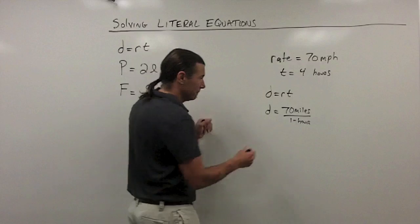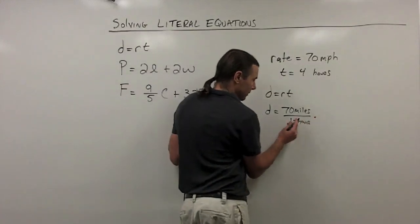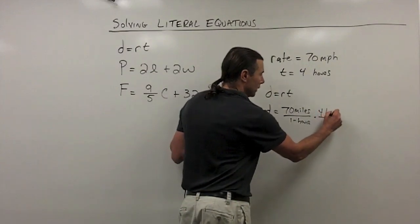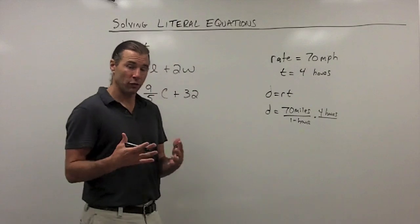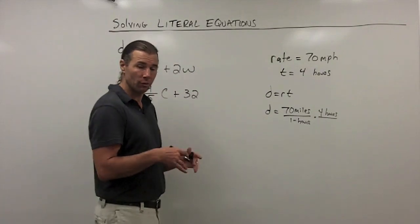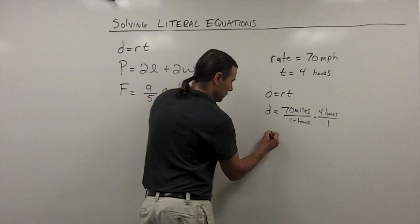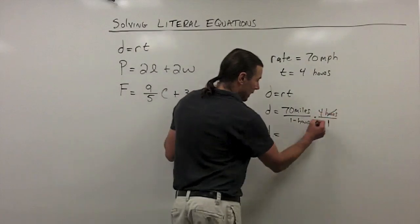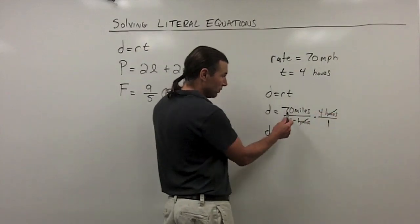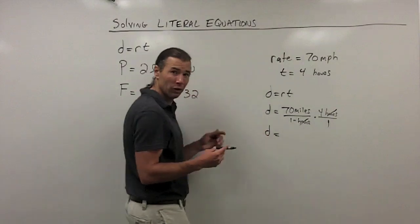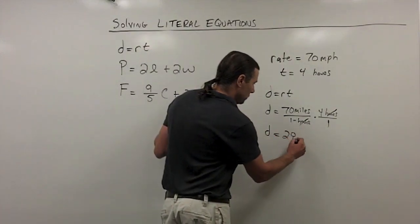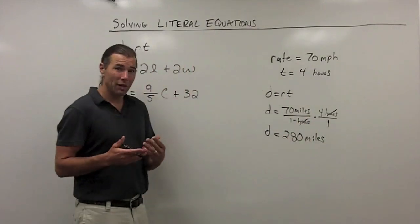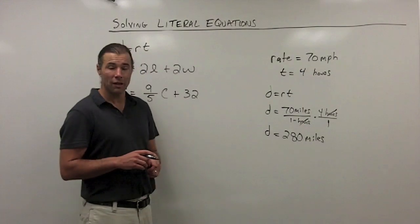I multiply the rate — 70 miles per one hour — times the time, written as a fraction: four hours over one. The hours divide out, leaving us with 70 miles times four. 70 times four is 280. So if we drive 70 miles per hour for four hours, we can travel 280 miles.